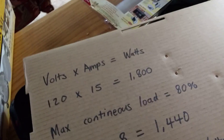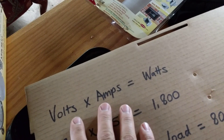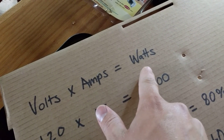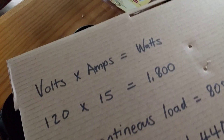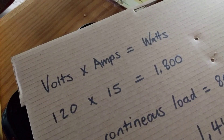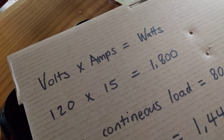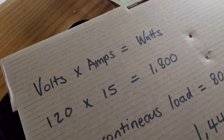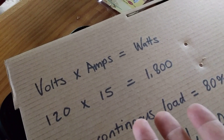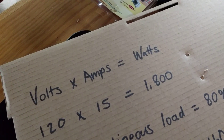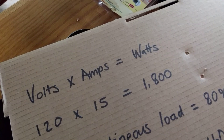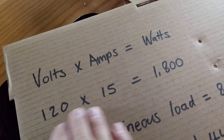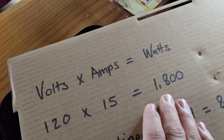The way you calculate this out is using this simple formula: volts times amps equals watts. Something really nice to remember — everything is rated in watts, but your circuits are rated in amps, so being able to compare those is really important. So 120 volts times 15 amps equals 1800 watts.